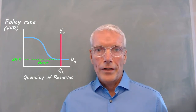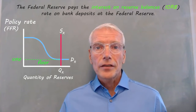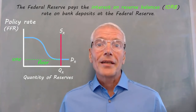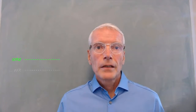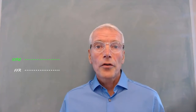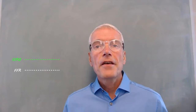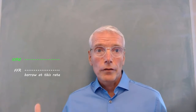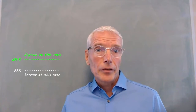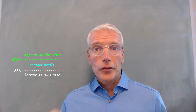There is also a floor on the demand for reserves. In the United States, the Federal Reserve pays interest on reserves banks hold at the Federal Reserve, at a rate called the interest on reserve balances rate. Suppose the federal funds rate that banks pay to borrow from each other were lower than the interest on reserve balances rate the Federal Reserve pays. Then, banks would borrow at the lower federal funds rate and deposit the funds at the Federal Reserve at the higher interest on reserve balances rate and make a certain profit equal to the difference between the two rates.